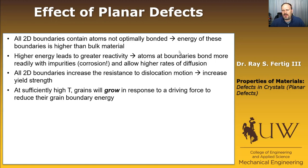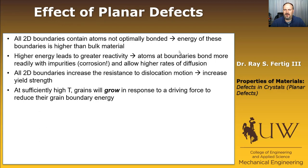At sufficiently high temperatures, grains are going to grow in response to the driving force to reduce their grain boundary energy. For any given volume of material, the larger the grain, the smaller the fraction of surface atoms, so it's a lower energy per unit volume. If you have 50 grains and want to reduce the energy of the system, it would be better to have it as a single large grain. This driving force is something we'll use in the course of heat treatment of metals.